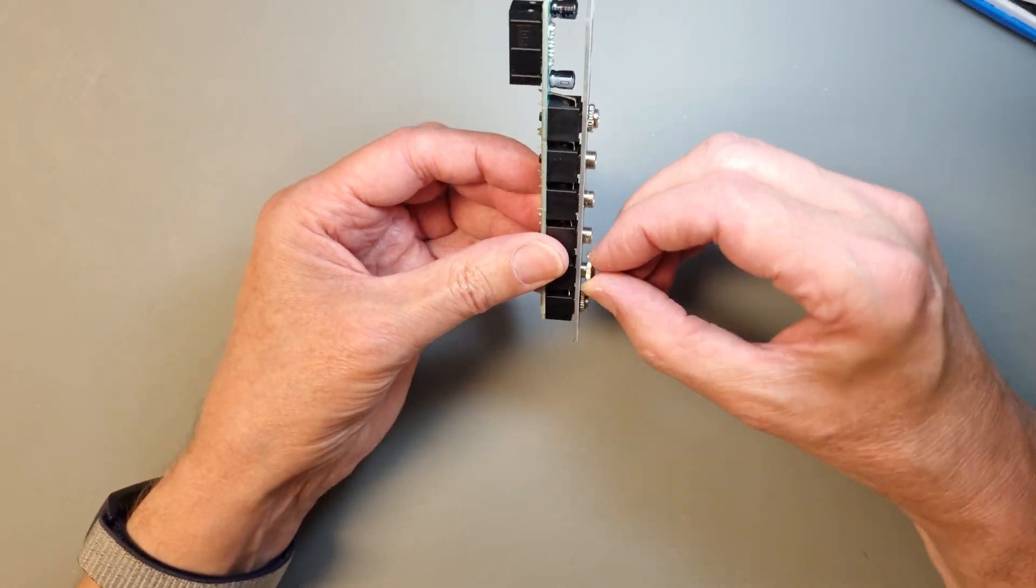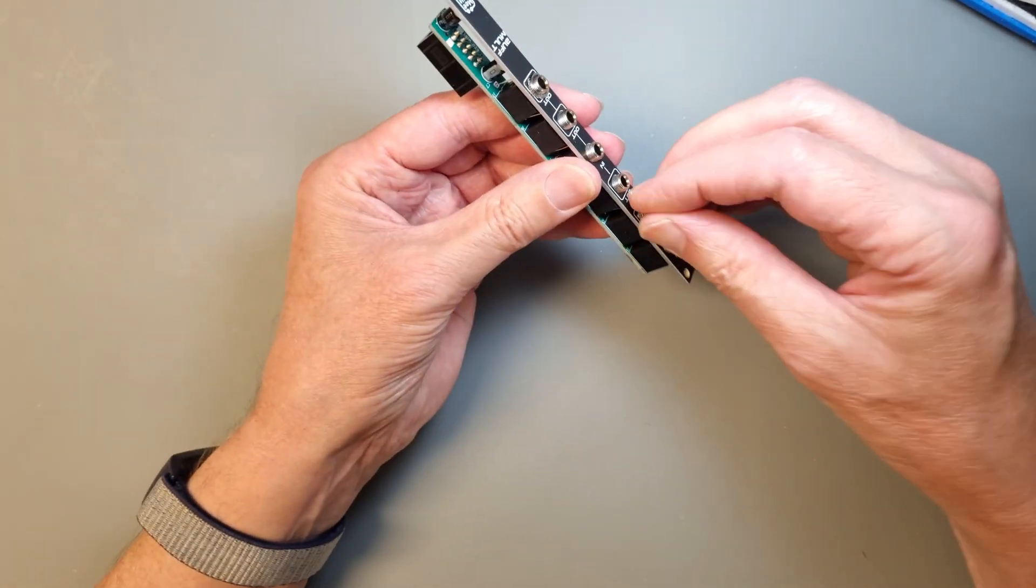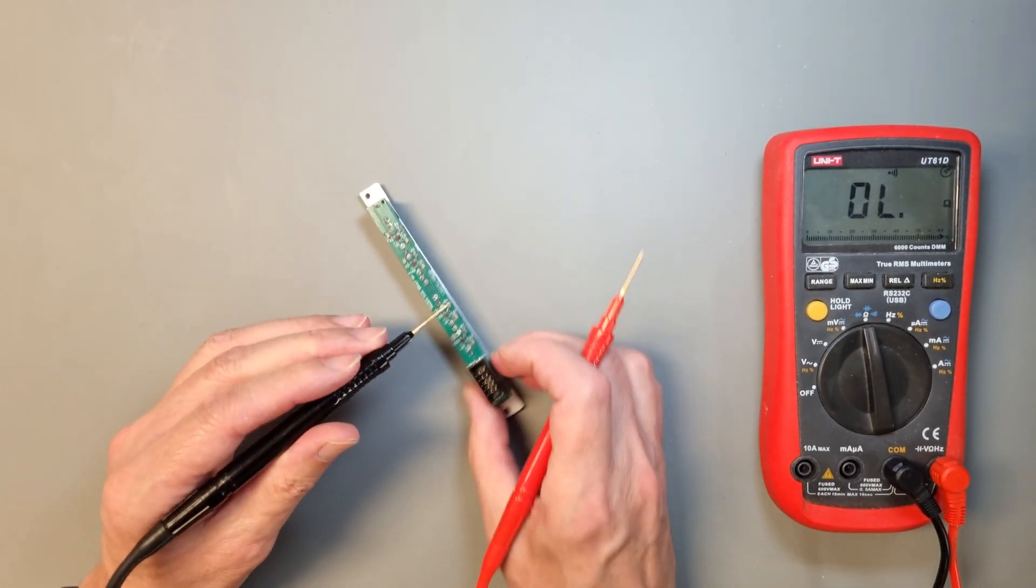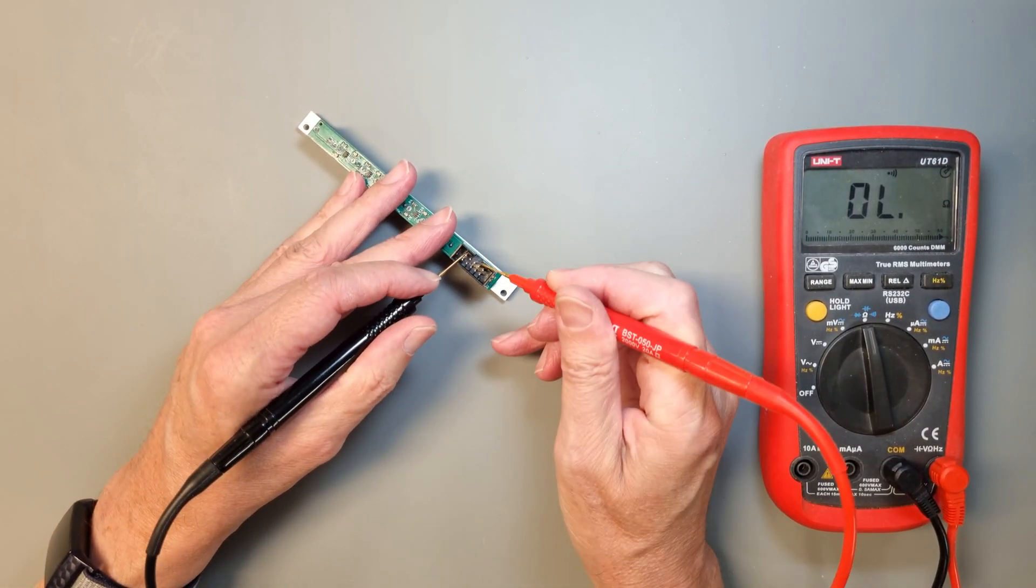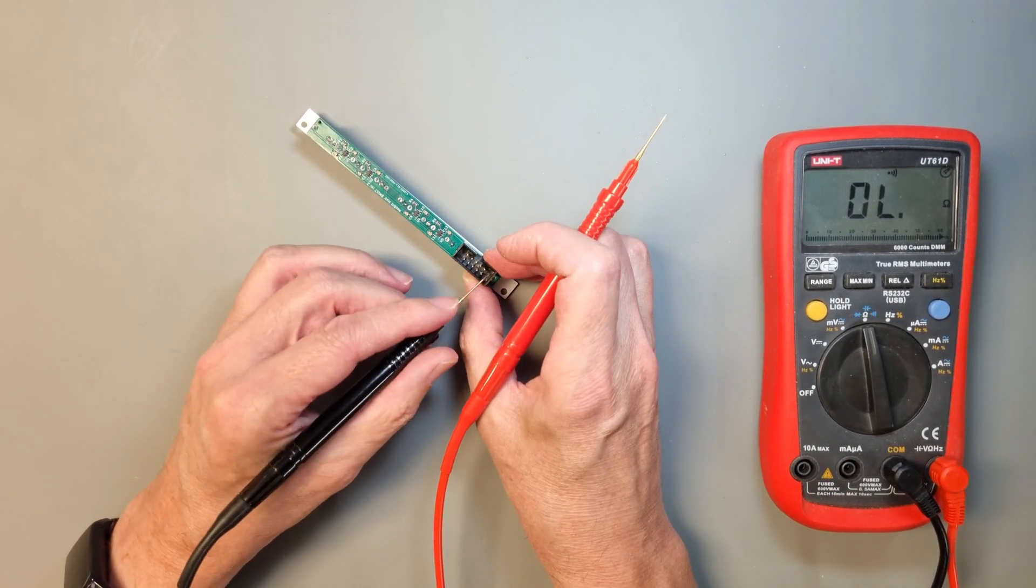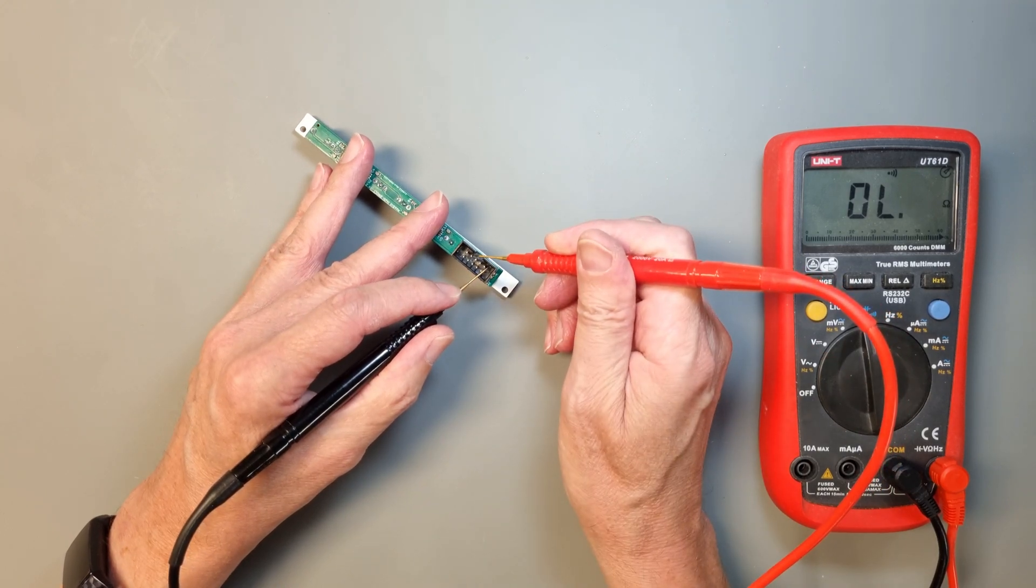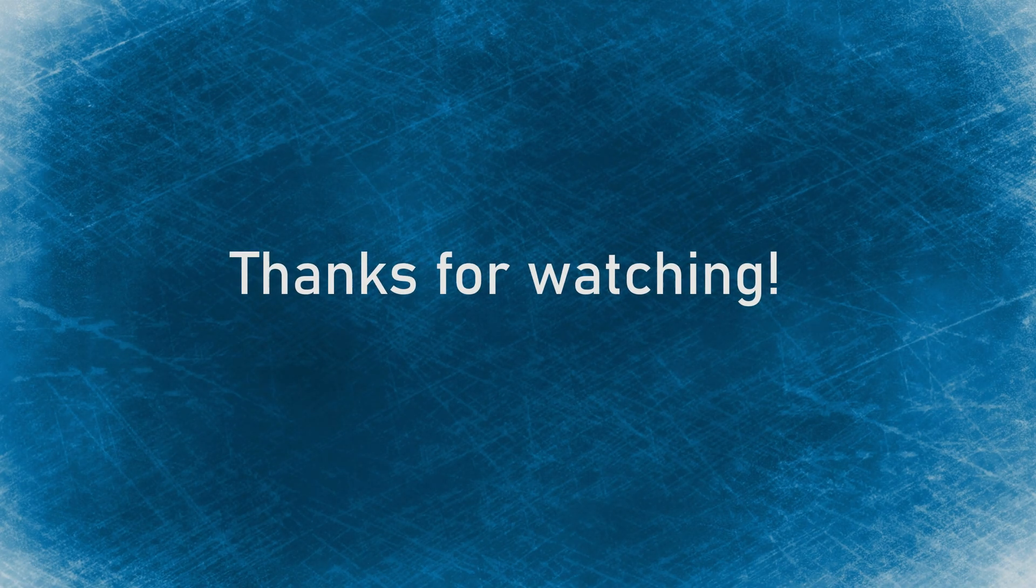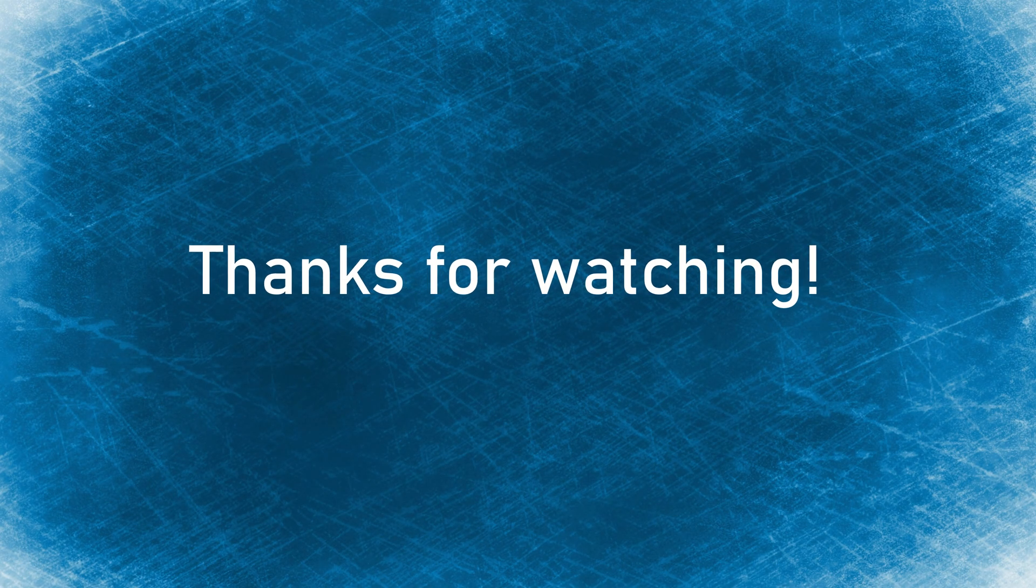And with that, the build is completed. But before we start using the module, I recommend to make a test for shorts between the power rails using a multimeter in beep mode. And that's all, thank you for watching and I hope you find the module useful.